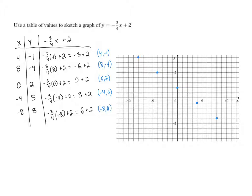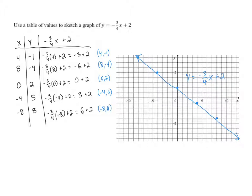If we look, those points do look like they're all on the same straight line, which gives us confidence that we've done this correctly. So we connect them with a straight line. Mine's not perfect — it's hard to use a ruler with the iPad, so hopefully yours is a little bit better. And we have our line y equals negative three-fourths x plus two.